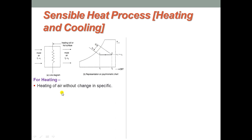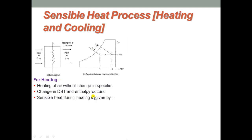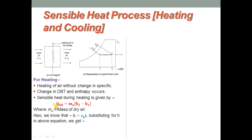Heating of air without change in specific humidity is known as the sensible heating process. The temperature increases from T1 to T2, that is dry bulb temperature, and enthalpy also changes from H1 to H2, but omega remains constant — that is, specific humidity is constant. Sensible heat during heating is given as Q = ma × (H2 − H1), where ma is the mass of air, H2 is final enthalpy and H1 is initial enthalpy.